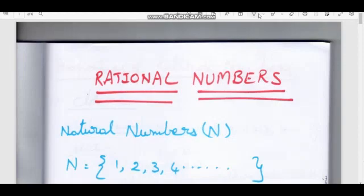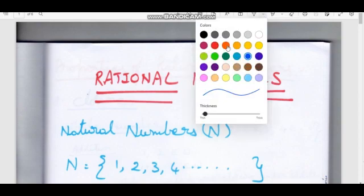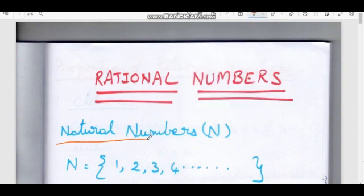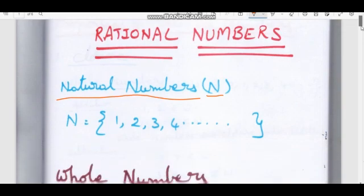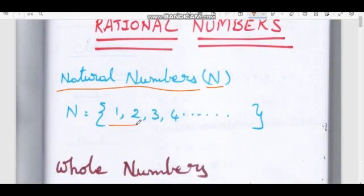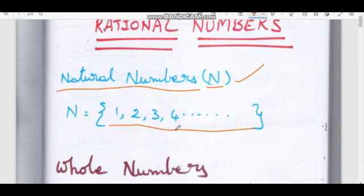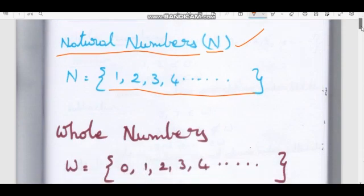First, Rational Numbers. Let's start with natural numbers. Natural numbers — how do we denote them? Any set of 1, 2, 3, 4, and so on to infinity. This is the set of natural numbers.